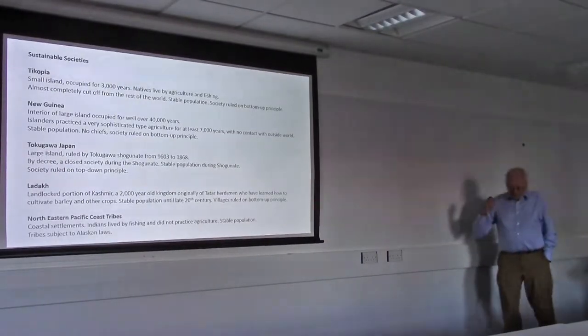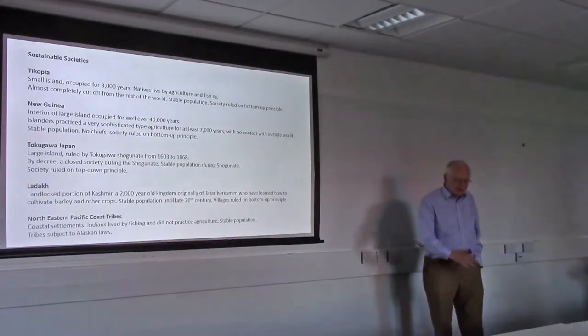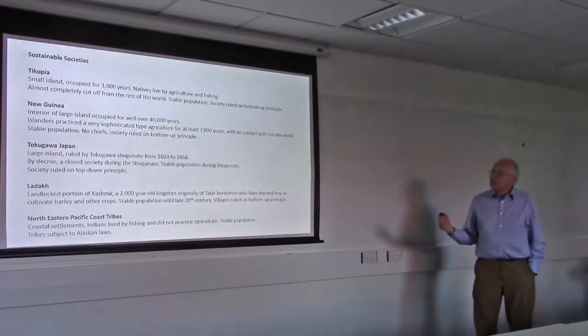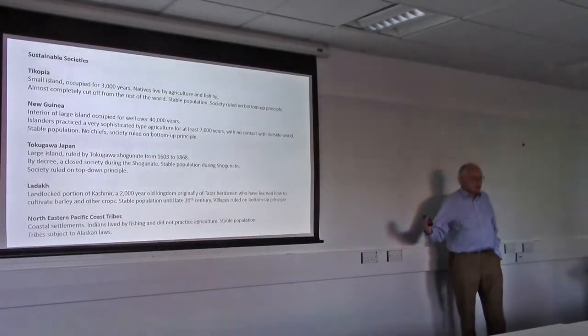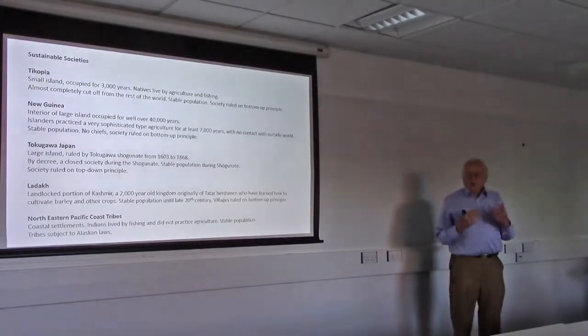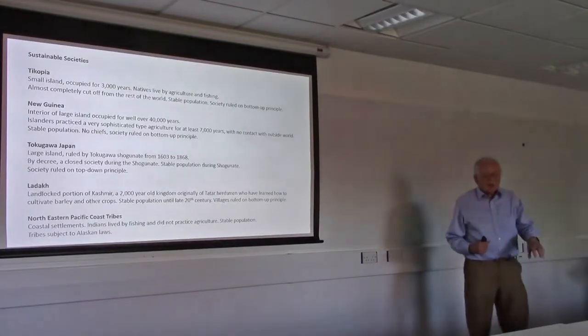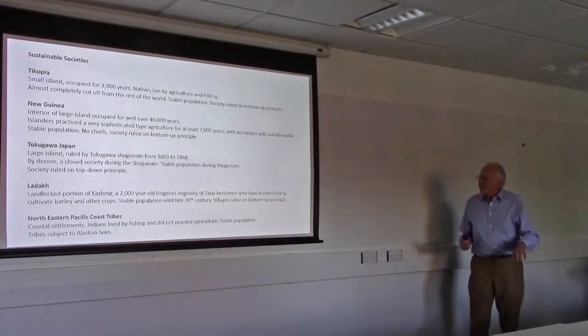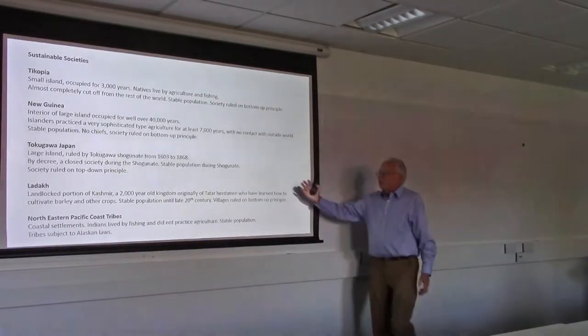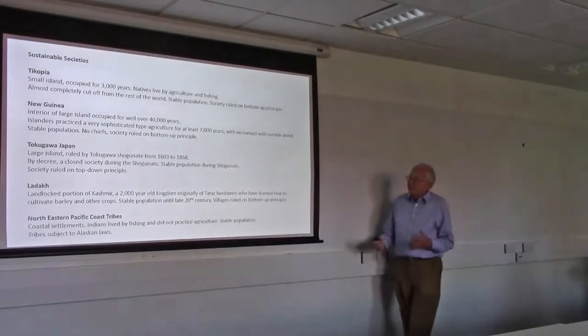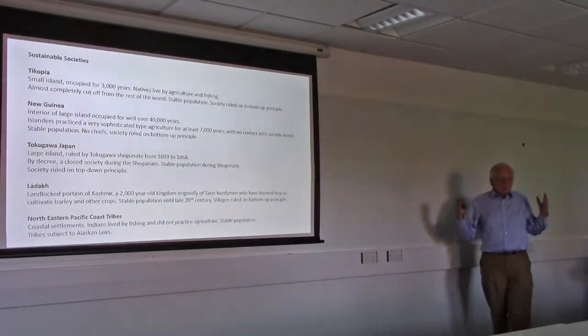What he did - he threw out all the foreigners. He sent all the Christian missionaries home. He closed Japan off. He forbade the Japanese to travel anywhere else in the world. They couldn't leave the country. For foreign trade, traders were allowed use of a small island in Nagasaki Harbour. There were 15 Tokugawa shoguns until 1868 and they maintained the same principle. Japan was cut off from the world.